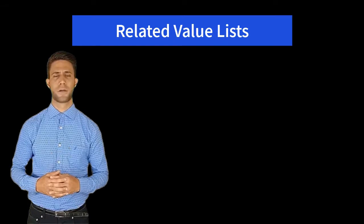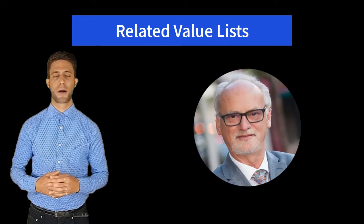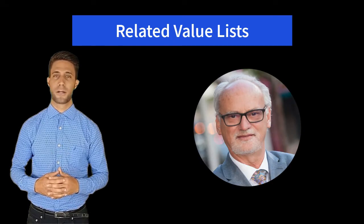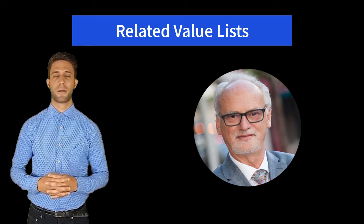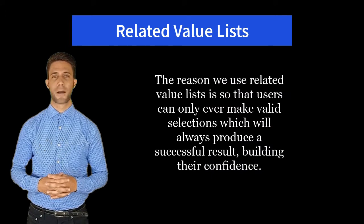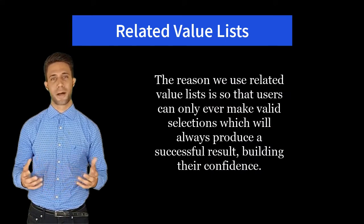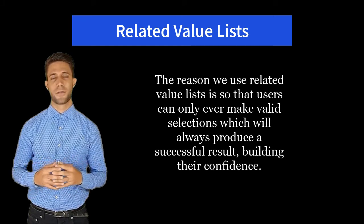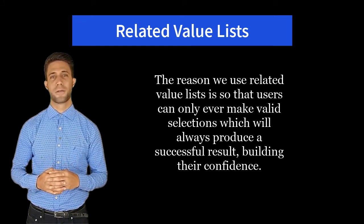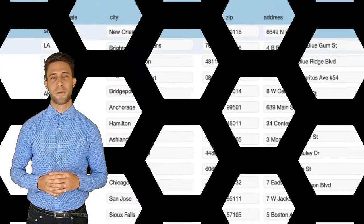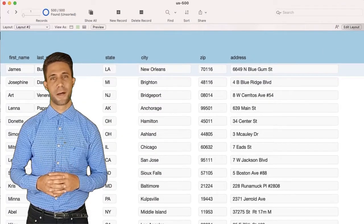In this step-by-step tutorial from Michael Roshard, we are going to show you how to build a set of related value lists. The reason we use related value lists is so that users can only ever make valid selections, which will always produce a successful result, building their confidence. We are using a free set of sample data from Brian Dunning, with 500 records.